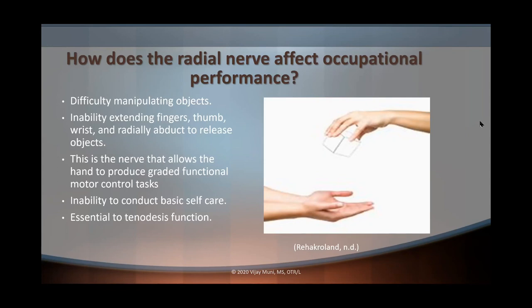Remember in school how we learned about tenodesis? With spinal cord patients, particularly at C6, they use tenodesis to perform their daily activities — it's extending your wrist actively and then you have passive finger flexion. If in a radial nerve injury the extensors are affected, they're not going to be able to extend that wrist, so the fingers won't passively flex and they won't be able to use tenodesis for their daily activities. The radial nerve plays an important role with tenodesis function because of those wrist extensors.